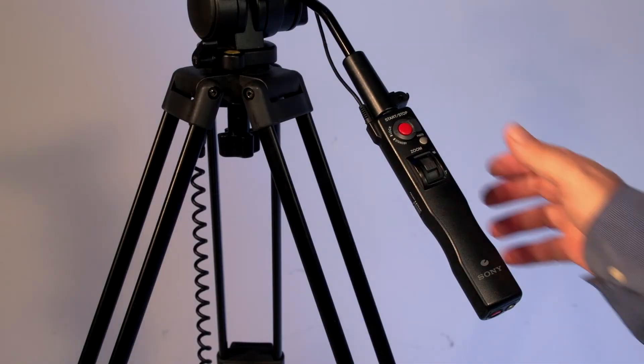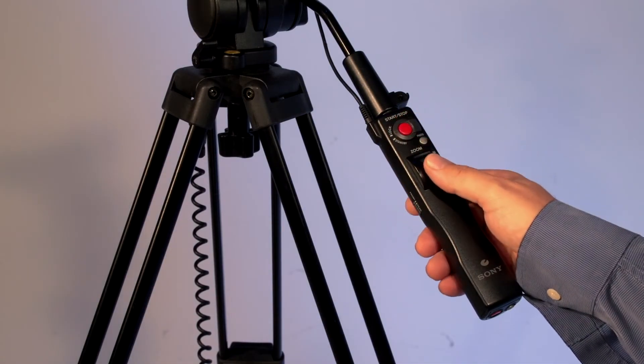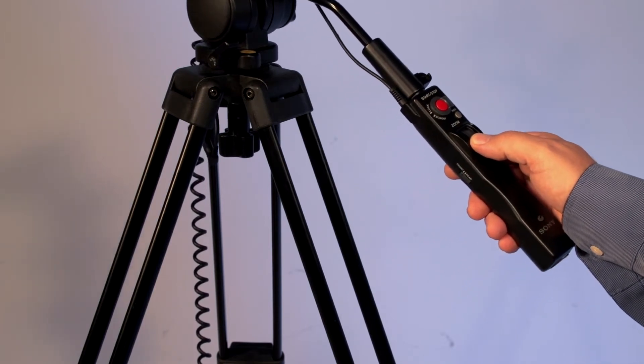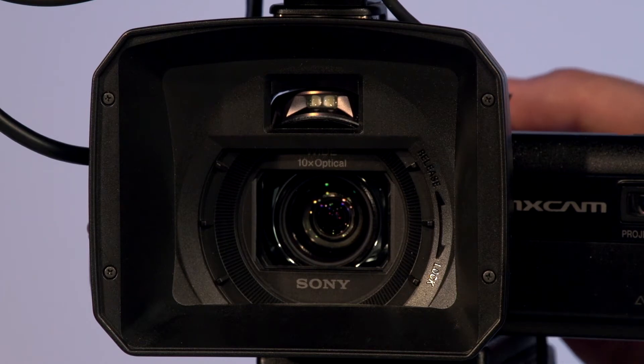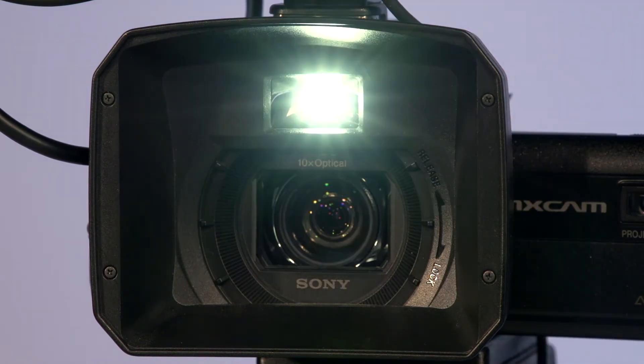The zoom lens also allows for extremely smooth zooms with control from either the zoom rocker on the camera body, or when controlling the camera from the tripod handle's LANC controller. You can also start and stop recording from this control. And if you'll notice, housed directly above the lens are two small daylight-balanced LEDs that can be used in a pinch to light up talent, or to add a fill light to a backlit subject.